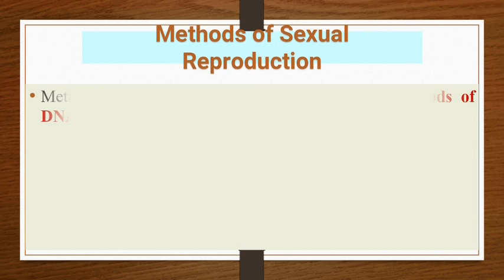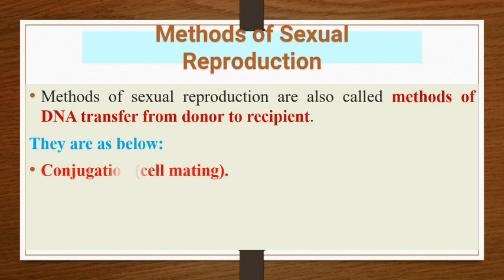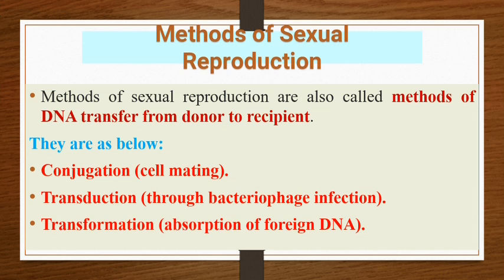Methods of sexual reproduction in bacteria are also called methods of DNA transfer from donor to recipient. They are: first, conjugation, which is cell mating — male and female cell mating is called conjugation; second, transduction, where a bacteriophage infection transfers genetic material from donor to recipient; and third, transformation, which is the absorption of foreign DNA from donor to recipient.